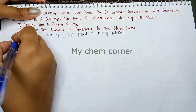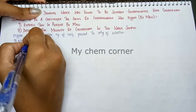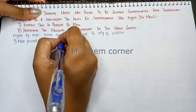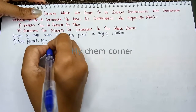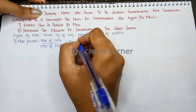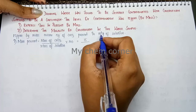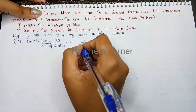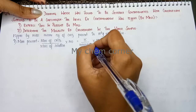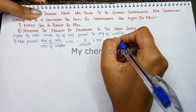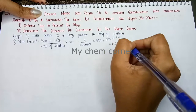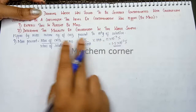Let's calculate the first one, which is mass percent. The formula for mass percent is: mass of CHCl₃ divided by mass of solution, into 100. Mass of CHCl₃ is 15 grams, divided by 10⁶. Into 100 — two zeros cancel — giving 15 × 10⁻⁴, which is 1.5 × 10⁻³ percent. That is the mass percent.